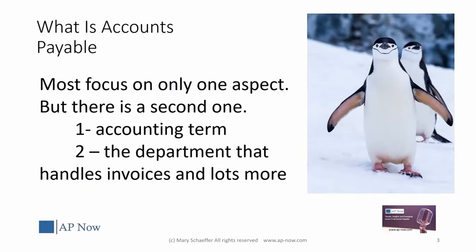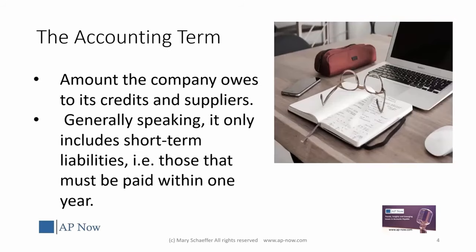What is accounts payable? When we talk about the term accounts payable, it can mean one of two different things. It can either be an accounting term — what many people are searching for — or it can refer to the department within virtually every organization that handles invoices and more. From a financial standpoint, accounts payable refers to the amount of money a company owes to its creditors, its suppliers — its bills payable — generally those liabilities on a short-term basis, typically within one year.